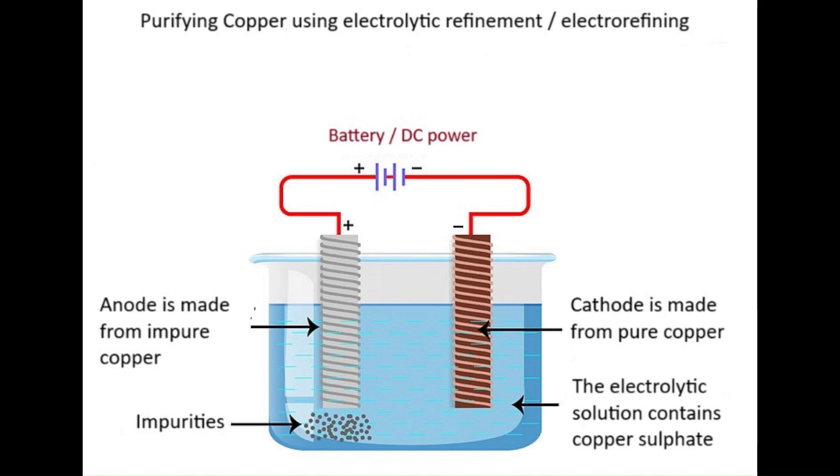In the illustration, the anode is made of impure copper, while the cathode is made of pure copper. In this process, the solution should contain the salt of whatever metal is being purified. So in this case, we've got a copper sulphate solution.